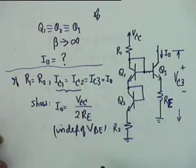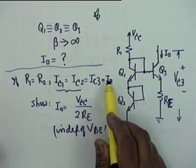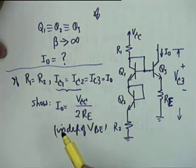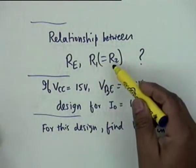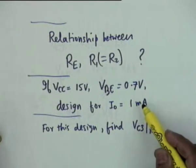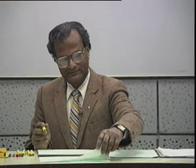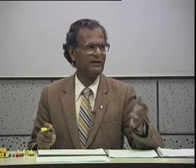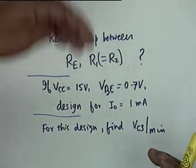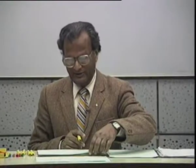Summarizing the parts: first find I0 as a general expression; second, if R1 equals R2 and all collector currents are equal, show I0 equals VCC by 2RE; third, find the relationship between RE and R1; fourth, find the numerical design; and finally, find the minimum VCE3 for active region operation.